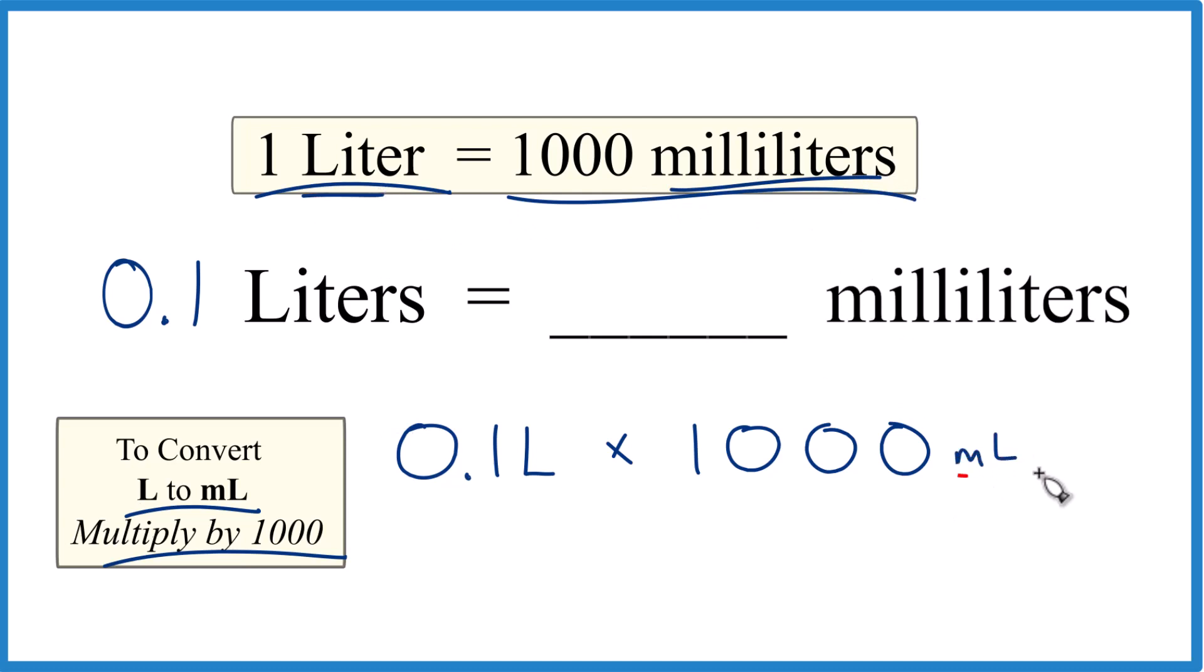So we're just going to call it milliliters per liter. When we multiply, liters on top and the bottom, those cancel out, left with milliliters, that's what we're looking for.